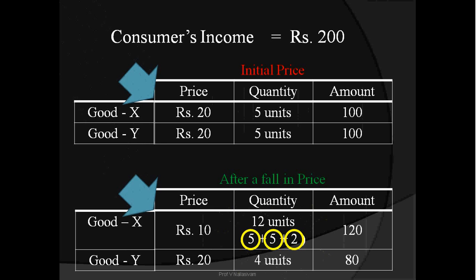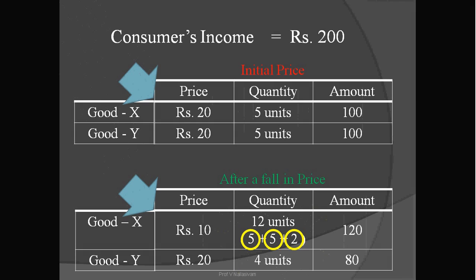Substitution effect thus also becomes one of the reasons for the demand curve to slope downwards from left to right. Apart from the already stated reasons, there are three more reasons. New consumers: when the price of a commodity falls, new consumers will start preferring the commodity. When they join the existing consumers, the demand for the commodity goes up, contributing to the negative slope of the demand curve.